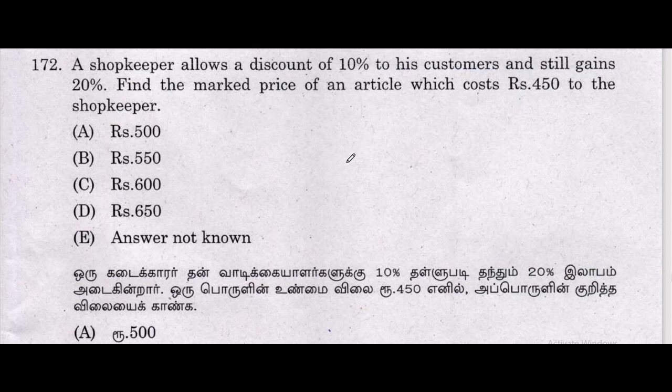Next problem: A shopkeeper allows a discount of 10% to his customers and still gains 20%. Find the marked price of an article which costs 450 to the shopkeeper.